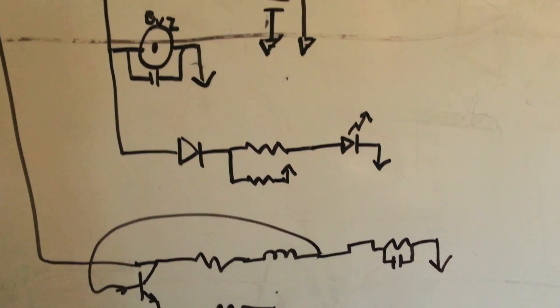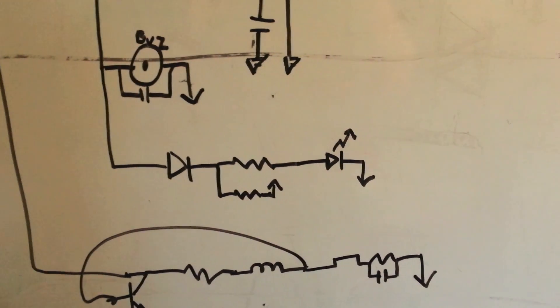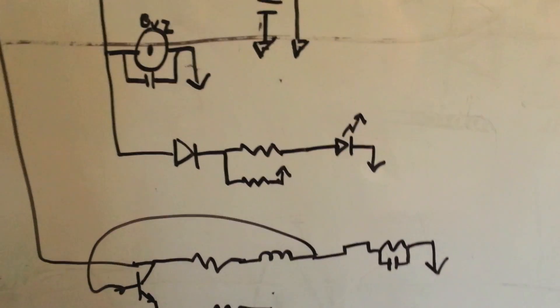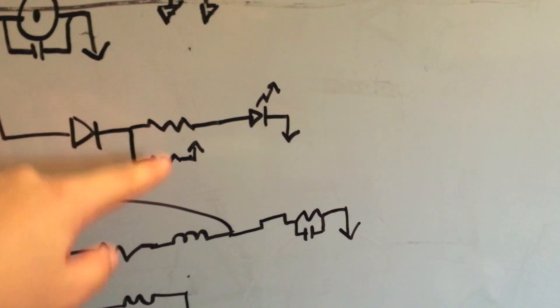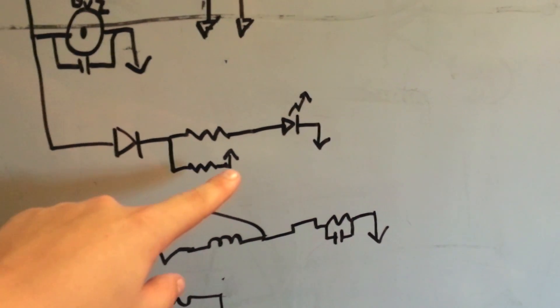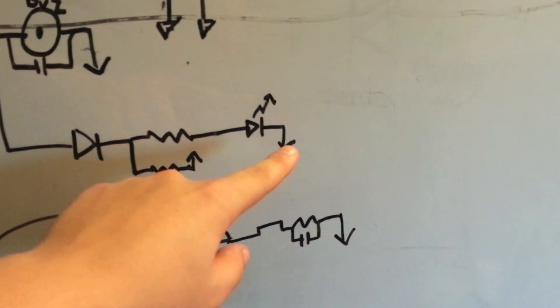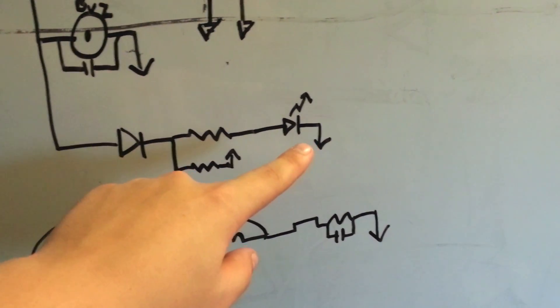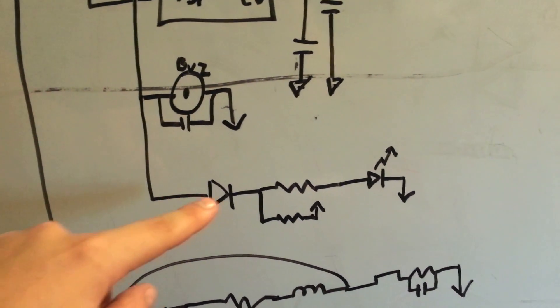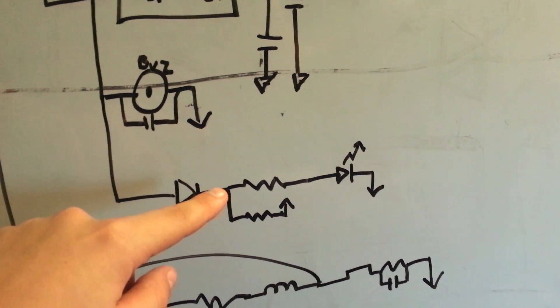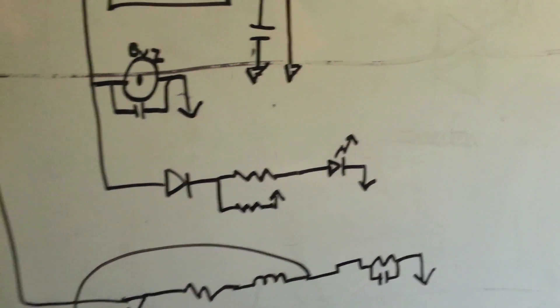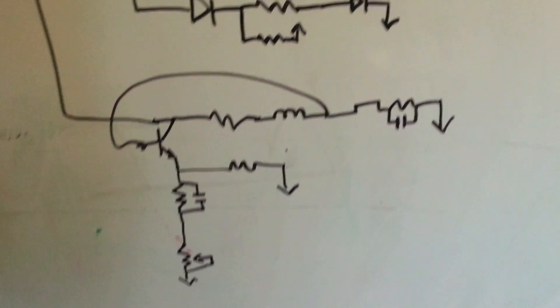And then it just also connects through to an indicator LED. It's got two resistors here in series with power. So you get a lower brightness when it's just on. And then when the buzzer is sounding, it also injects power to this point here, making the LED come a little bit brighter.